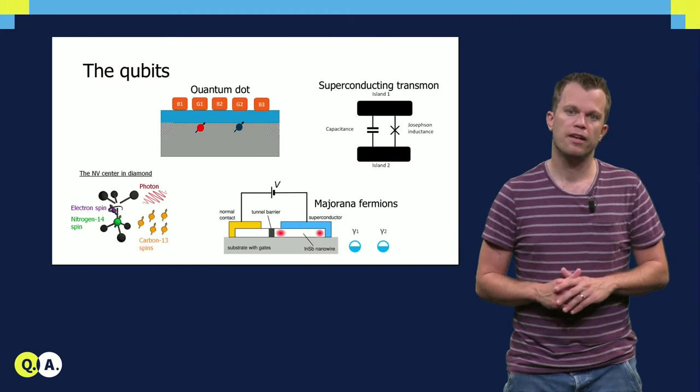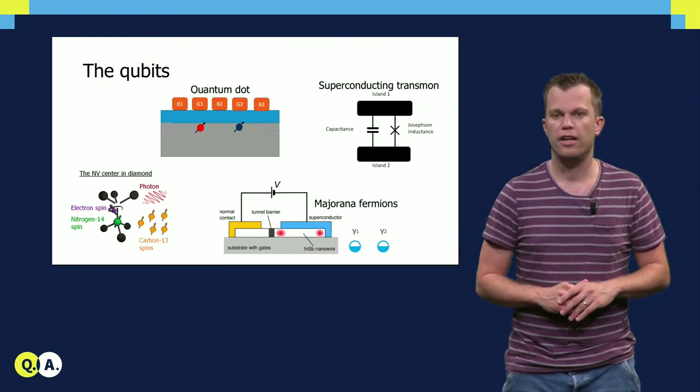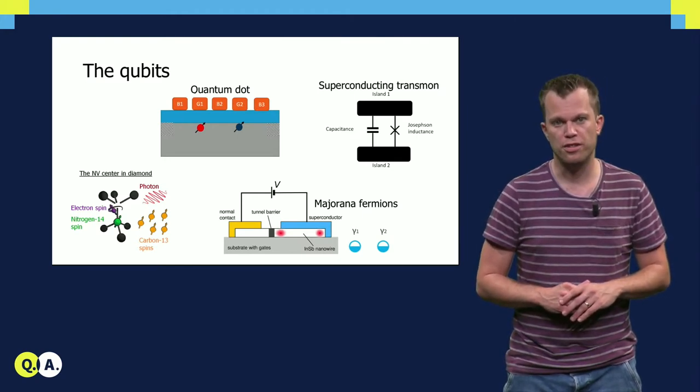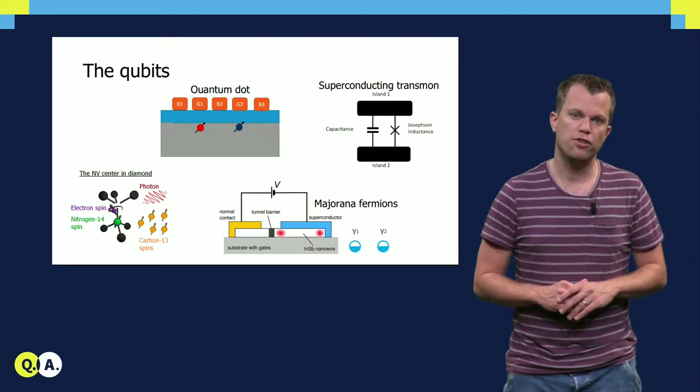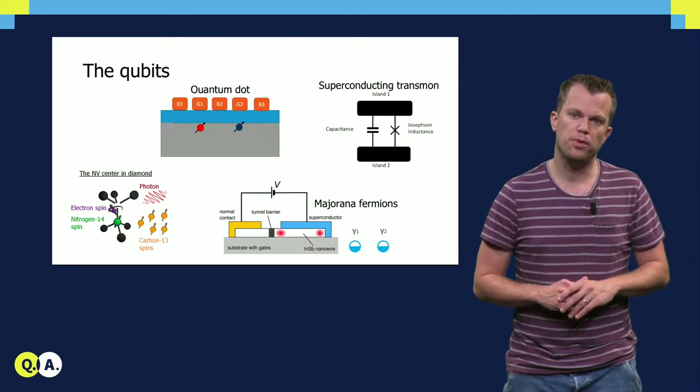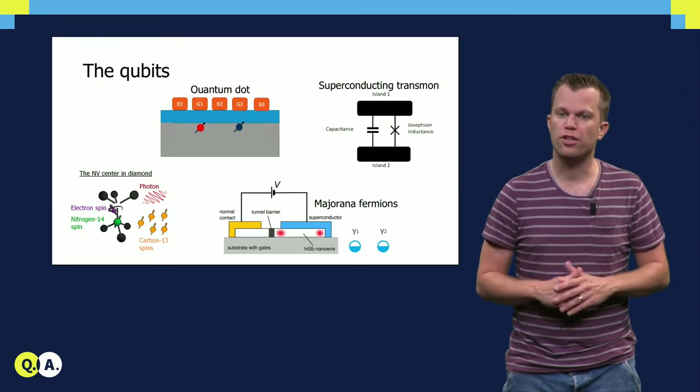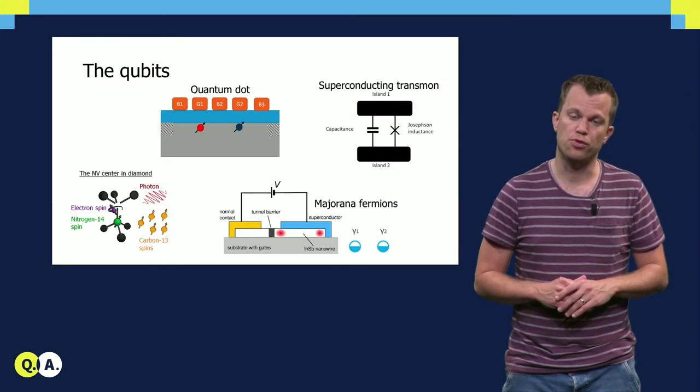In addition, clever qubit designs enable to decrease a qubit's sensitivity to noise. For spin and superconducting qubits, sweet spots exist where to first order qubits are insensitive to certain noise.